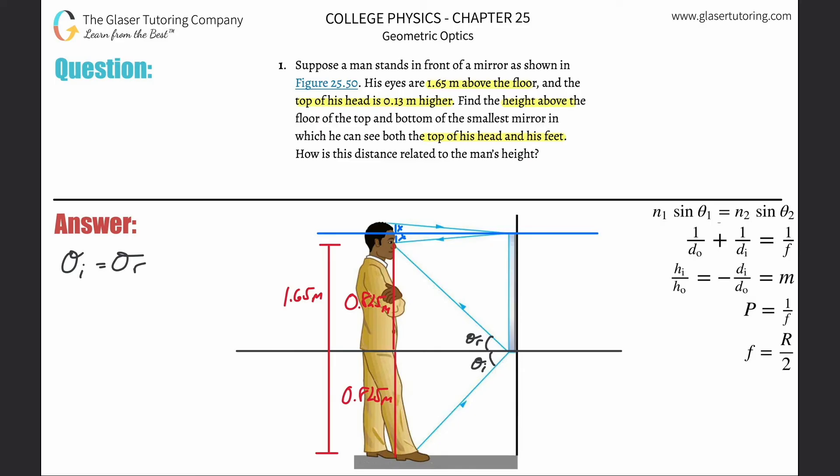They told us now that the total distance between the man's eyes and the top of his head is equal to 0.13 meters. So what that means is that each of these x values will be half of that. This little length here is going to be half of 0.13, so half of that is going to be 0.065.